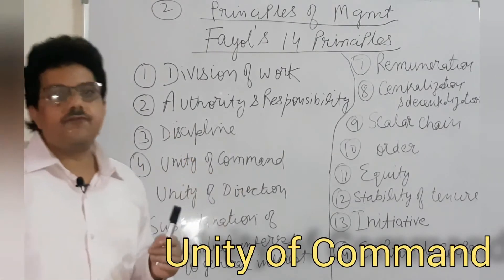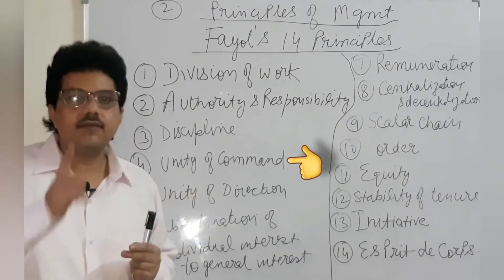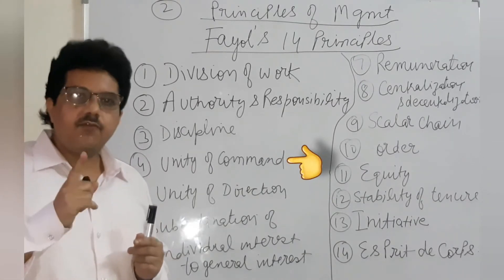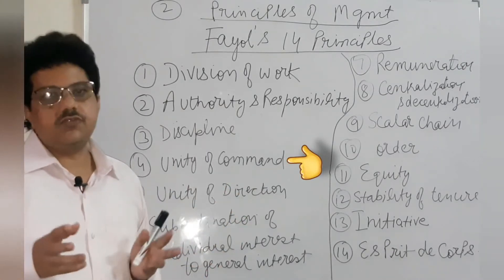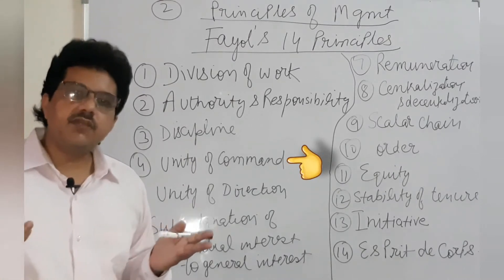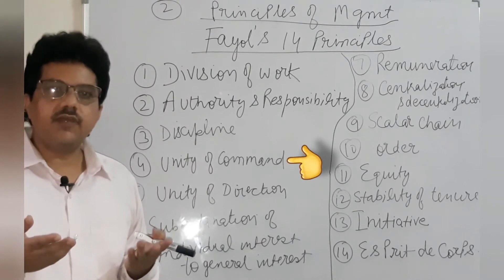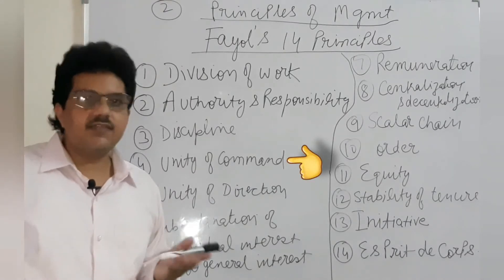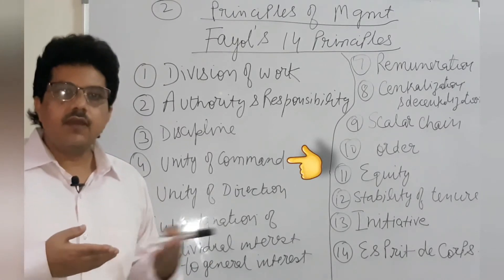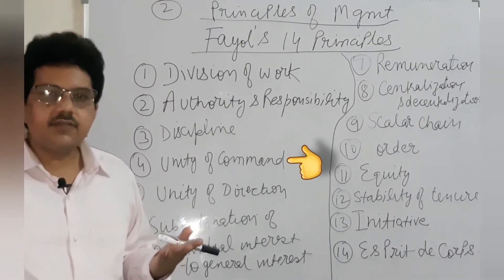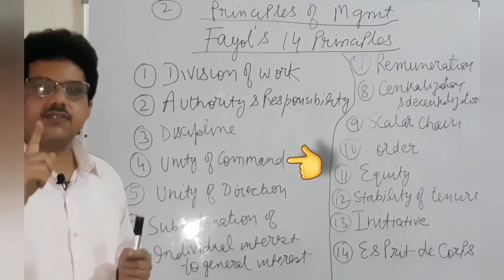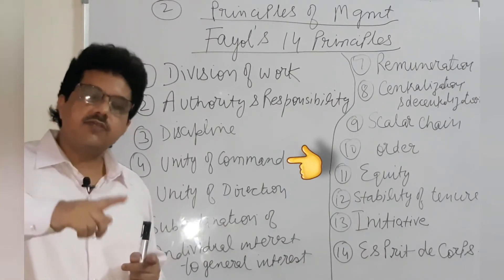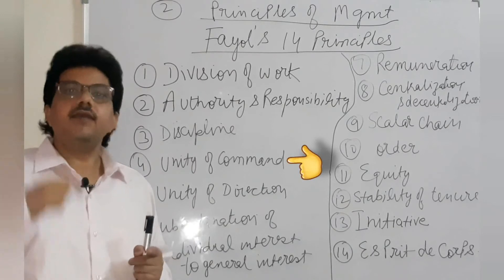Next is Unity of Command. Unity of command generally means that the orders you receive should come from one boss only — you should have one boss. Multiple bosses will create a lot of anarchy and confusion. If 3-4 people are giving you orders, you won't understand what to do. Mr. Gupta said something, Mr. Sharma said something, Mr. Agarwal said something — they are all seniors. Now you will be confused: whose instructions do I follow? That should not happen. Your boss should be clearly one person, say Mr. Gupta, and you follow only what Mr. Gupta says.